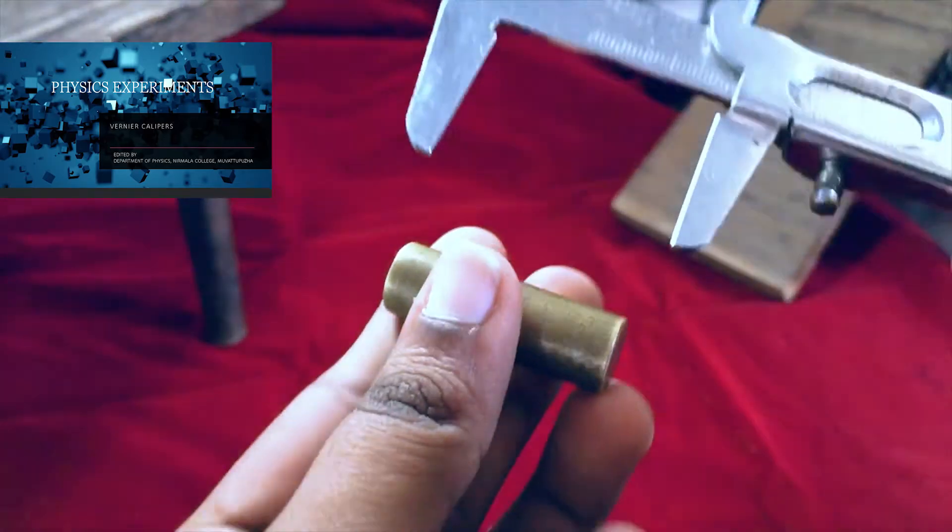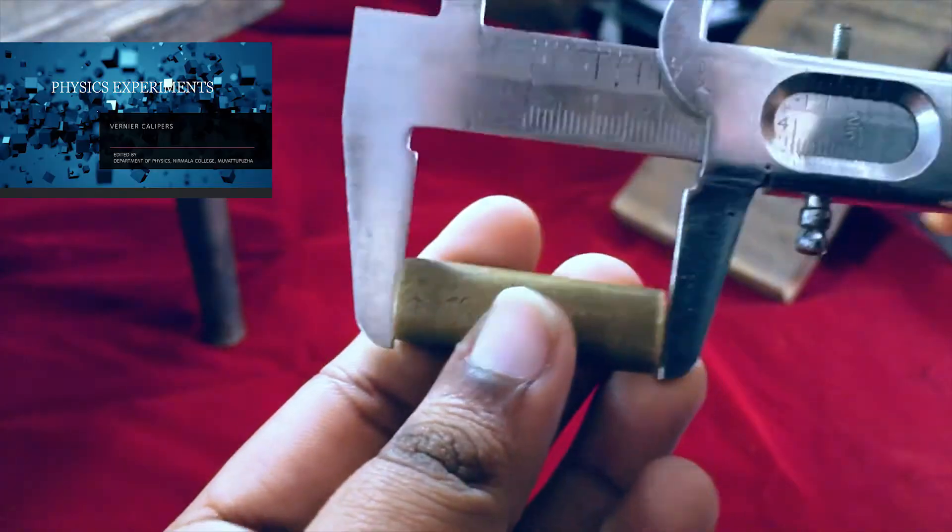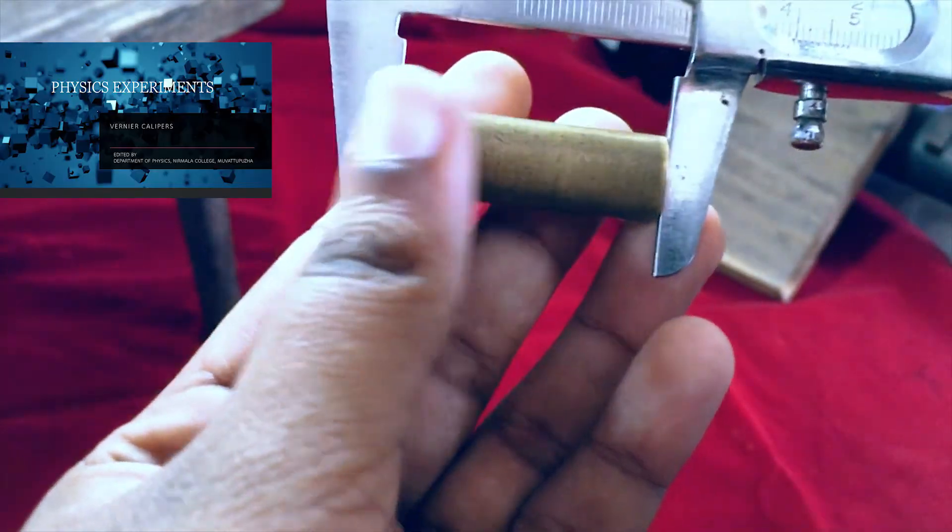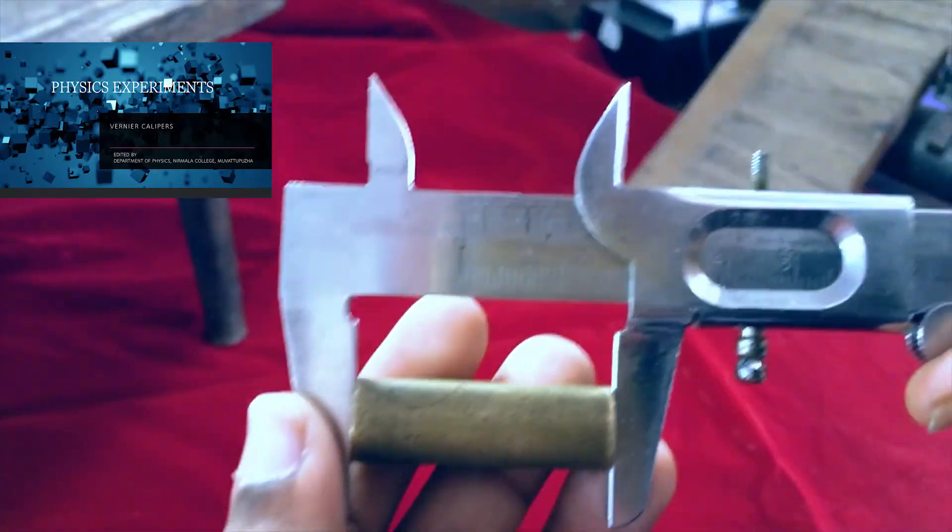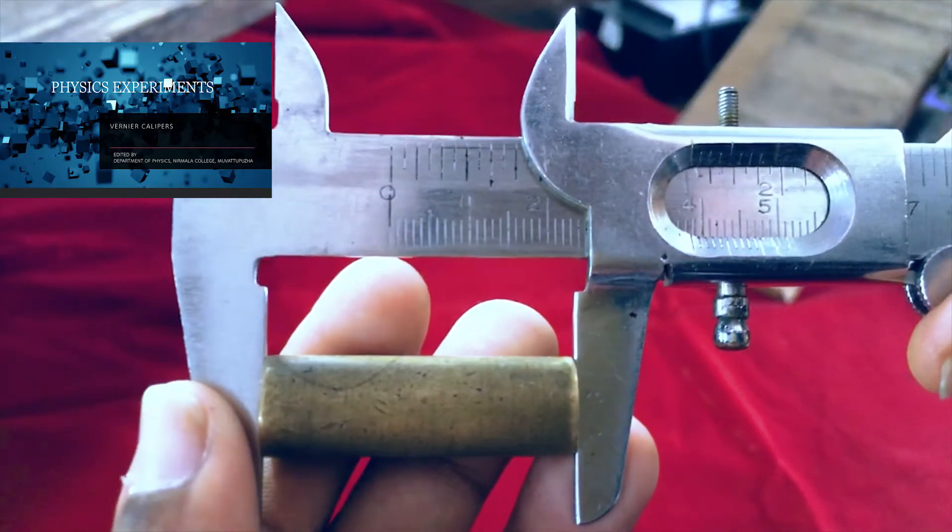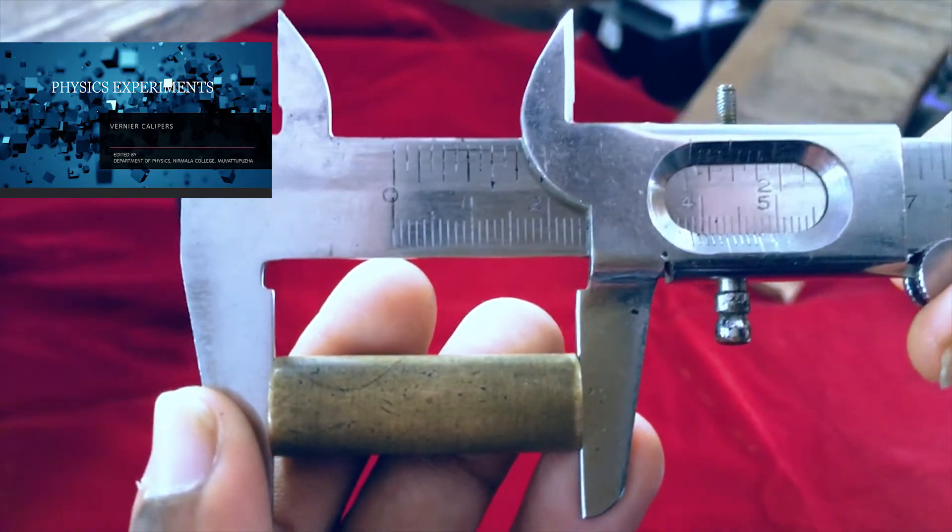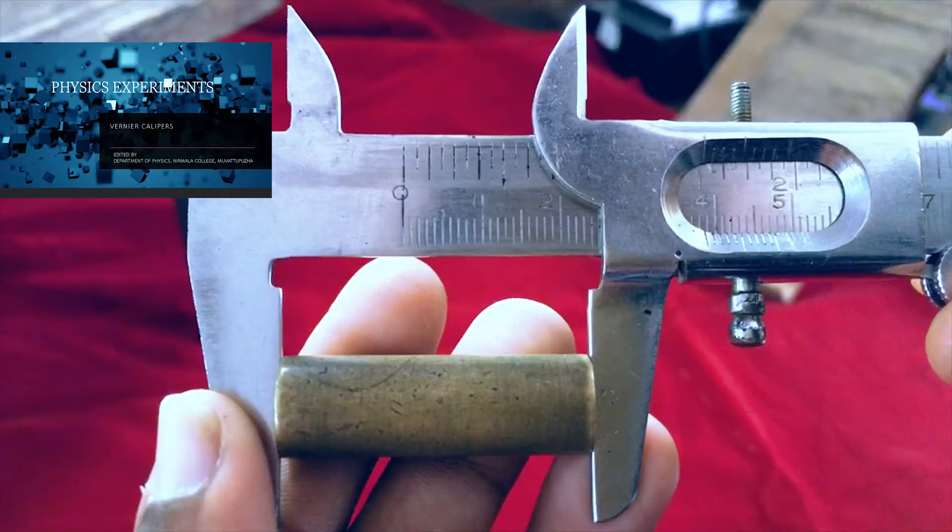Now let's measure the length. Let's place the cylinder. Then take the reading. The main scale reading is 3.8.